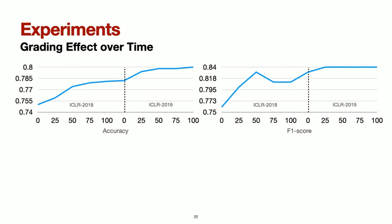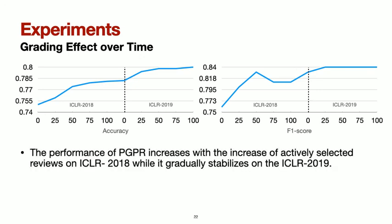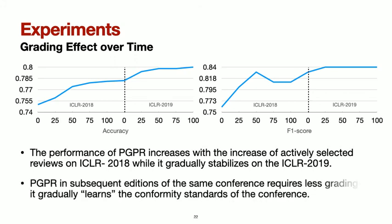We also evaluate the grading effect over time by comparing ICLR 2018 with ICLR 2019. We find that performance increases with the number of actively selected reviews on the 2018 dataset, while it gradually stabilizes on the 2019 dataset. Notably, fewer reviews are actively selected for 2019 than 2018, confirming that our framework requires less grading in subsequent editions as it gradually learns the conformity standards of the conference.